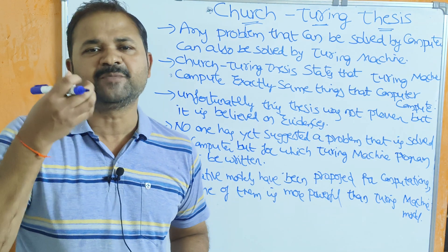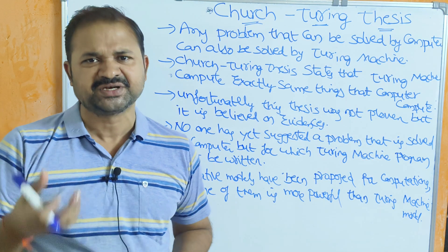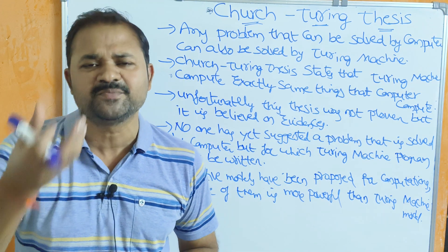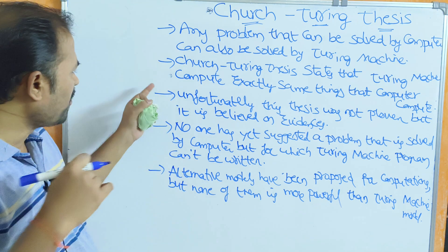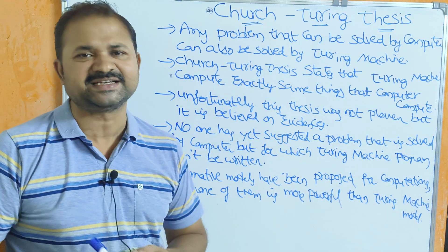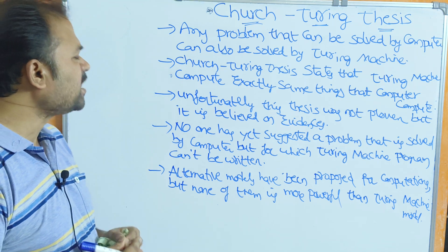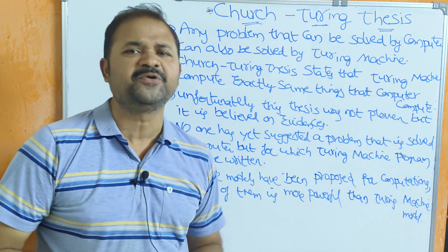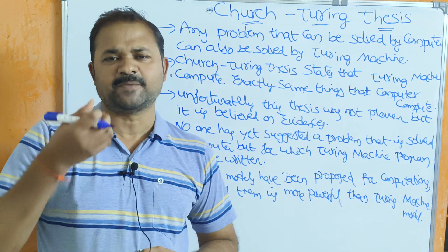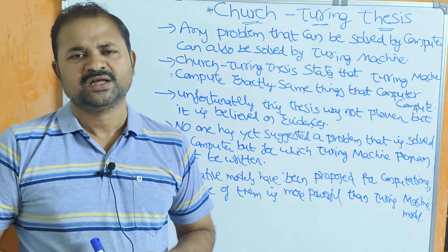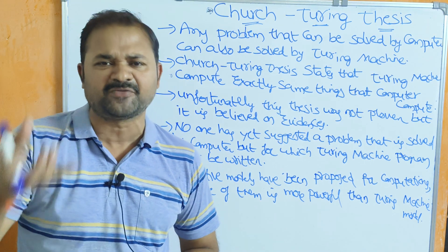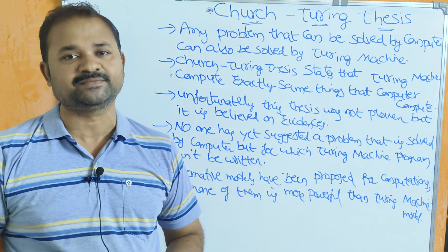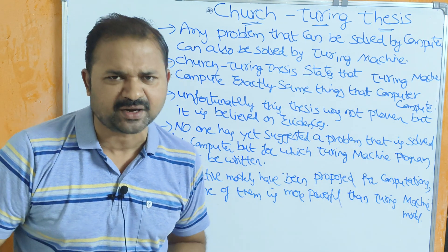That means if a computer performs a hundred computations, then the Turing machine can also perform all those hundred computations. The Church-Turing thesis states that a Turing machine computes exactly the same things that a computer computes. So the computing functionality of the Turing machine and the computer are the same.